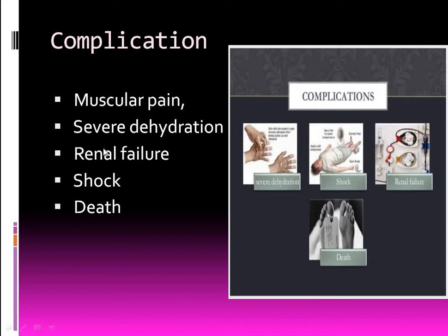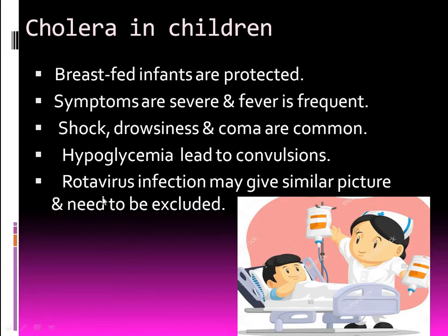Complications: dehydration leads to muscle pain, and severe dehydration leads to renal failure because the kidney's compensatory mechanism is overwhelmed, which can progress to shock and death. In children: breastfed infants are protected and Vibrio cholerae is less common in them. Symptoms in children are very severe — fever, shock, drowsiness, and coma are common, and hypoglycemia can lead to convulsions.